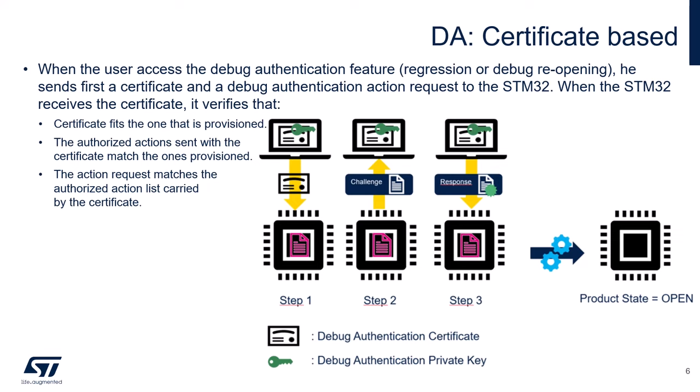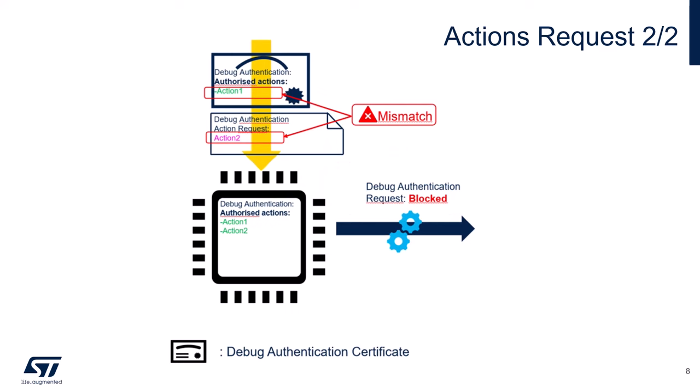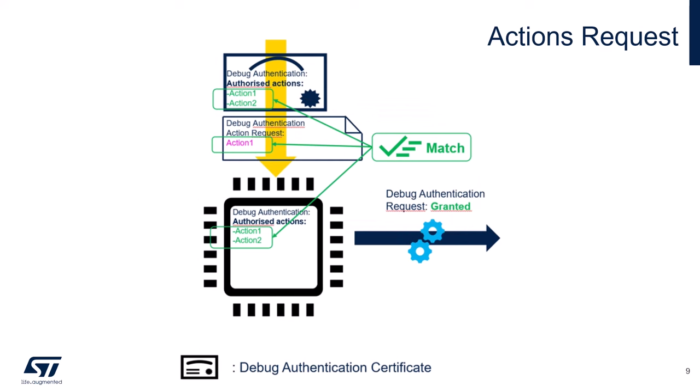The STM32 verifies that the host owns the debug authentication private key before performing the requested action — regression or debug reopening — and the certificate carries the requested action. Here's an example of a mismatch: while the device is provisioned to handle requests for action two, it receives requests for action one, and as such, the request is blocked. Similarly, if the device is provisioned for multiple actions such as action one and action two, the host certificate is expected to include a matching action list. Receiving an action request not conforming to the action list in the certificate also results in the request being blocked. In a successful action request, both the certificate and the STM32 device need to carry the action list, and the action request needs to conform to the list, resulting in a match and the request being granted.